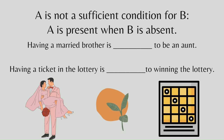A is not a sufficient condition for B when A is present but B is absent. For example, having a married brother is not sufficient to be an aunt, because it does not automatically mean you become an aunt just because your brother got married. Having a ticket in the lottery is not a sufficient condition for winning the lottery, because there is still a possibility that even with a ticket you will not win.